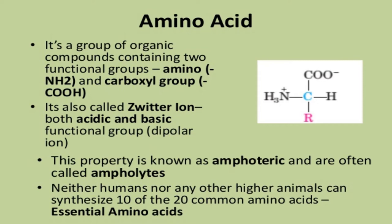Amino acids have both acidic and basic functional groups, which make them dipolar ions. This property is known as amphoteric, and they are often called ampholytes. Neither humans nor any other higher animals can synthesize 10 of the 20 common amino acids, which is why they are called essential amino acids.